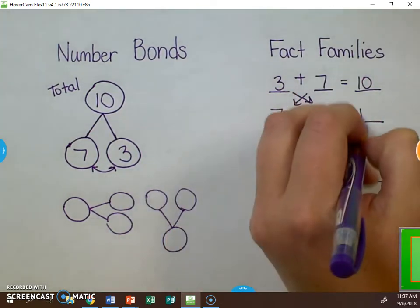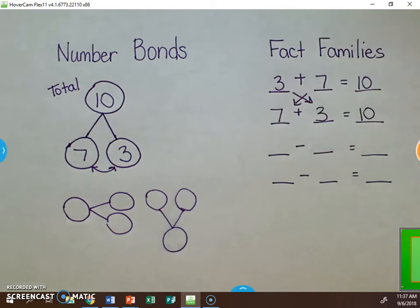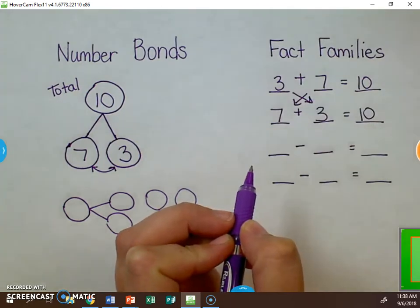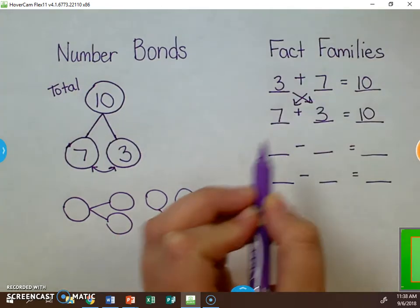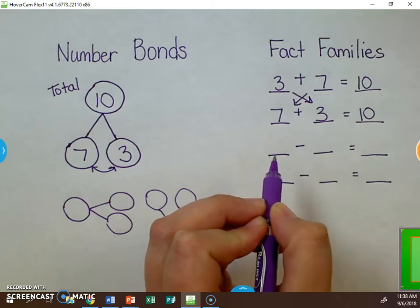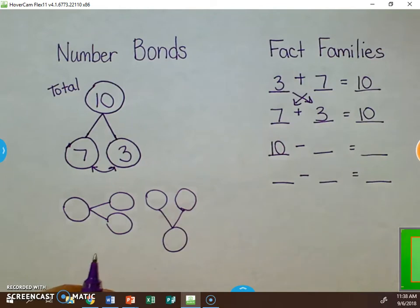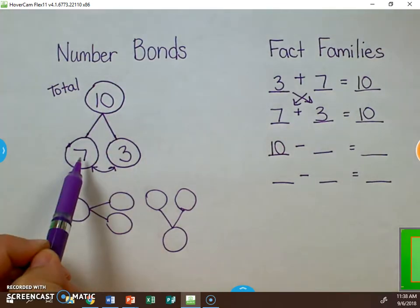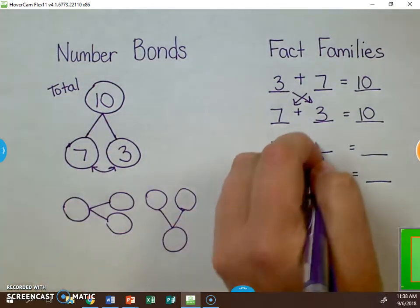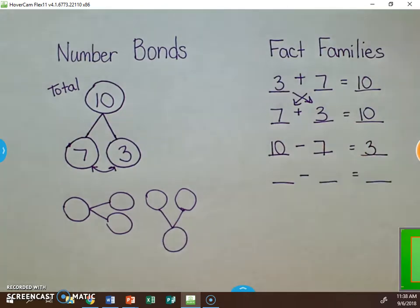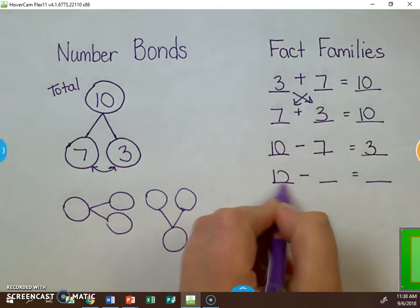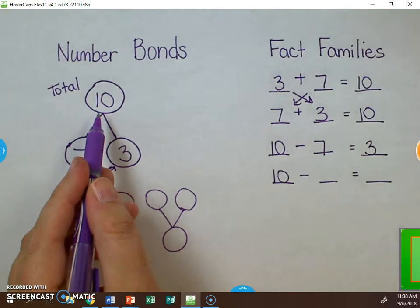Next, you start with the largest number in the first blank to create your subtraction problem. Just like we talked about earlier, we could take 10 and take 7 away from it and come up with 3. Or we could switch the numbers—commutative property again—and take 10 minus 3 to come up with 7.